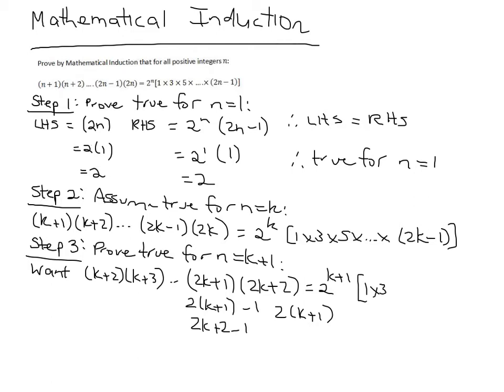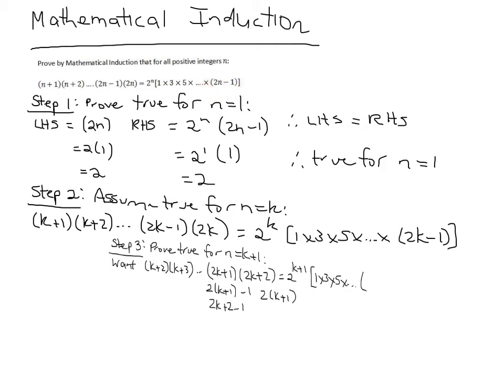And that's all equal to 2 to the k plus 1, 1 times 3 times 5 times, and again, it's 2n minus 1, which was the same as this one here. So that's the 2k plus 1 term.